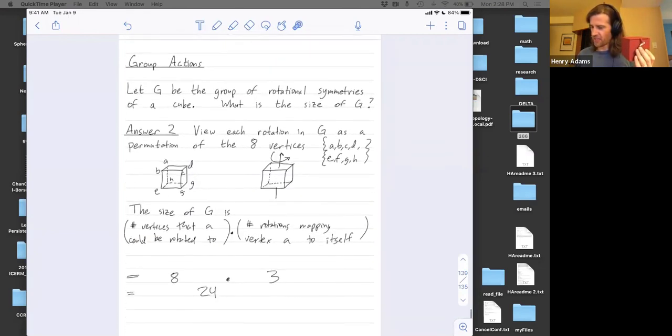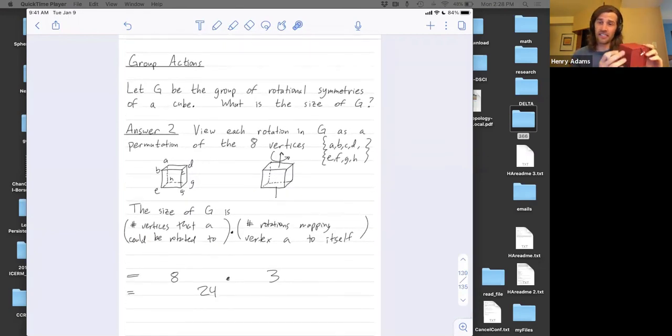If I think of these rotations as permuting vertices instead, then there are three different rotations fixing a given vertex. And there's eight different places that vertex could get mapped. So I got the same size 24, but this time realized as eight times three.